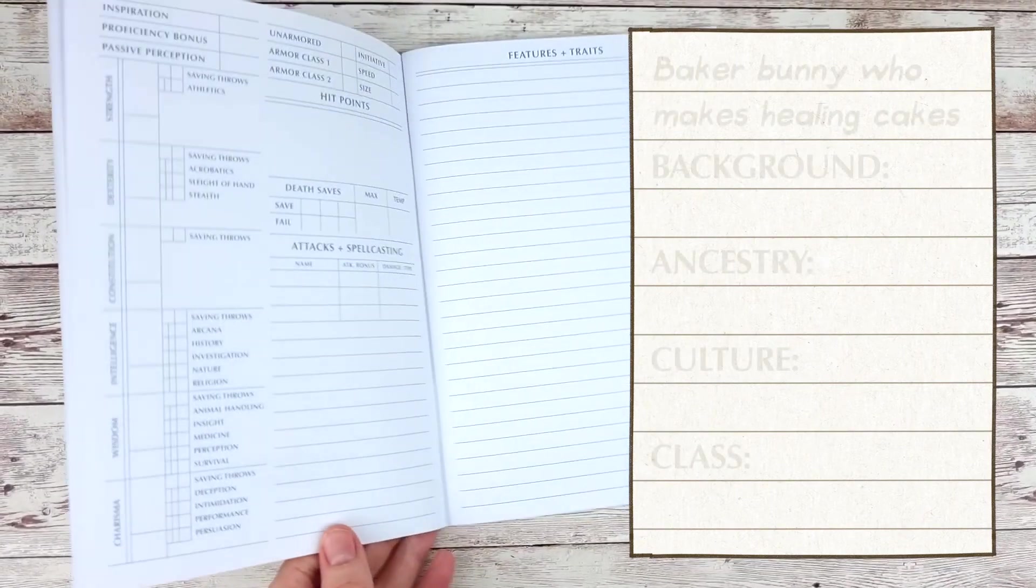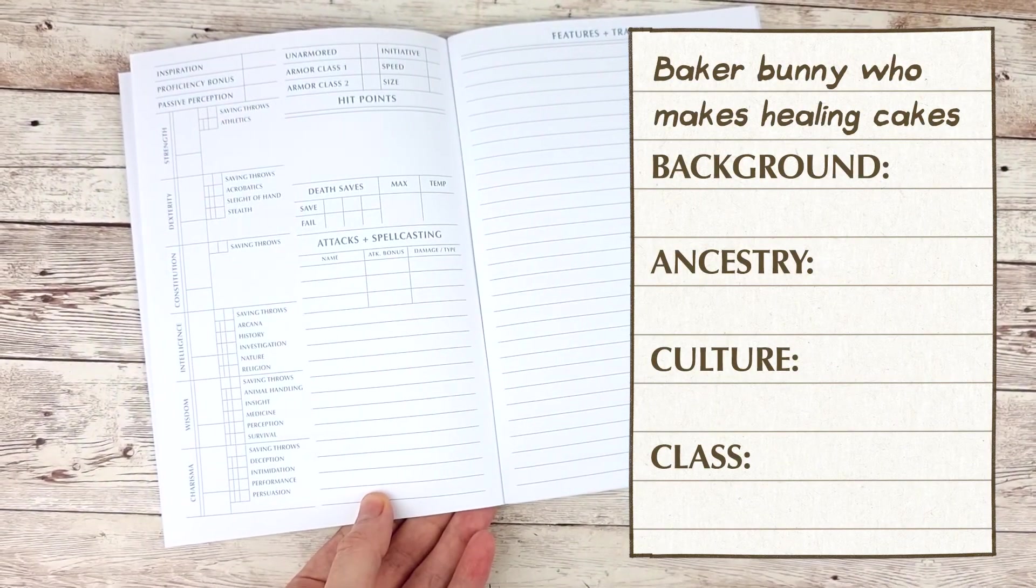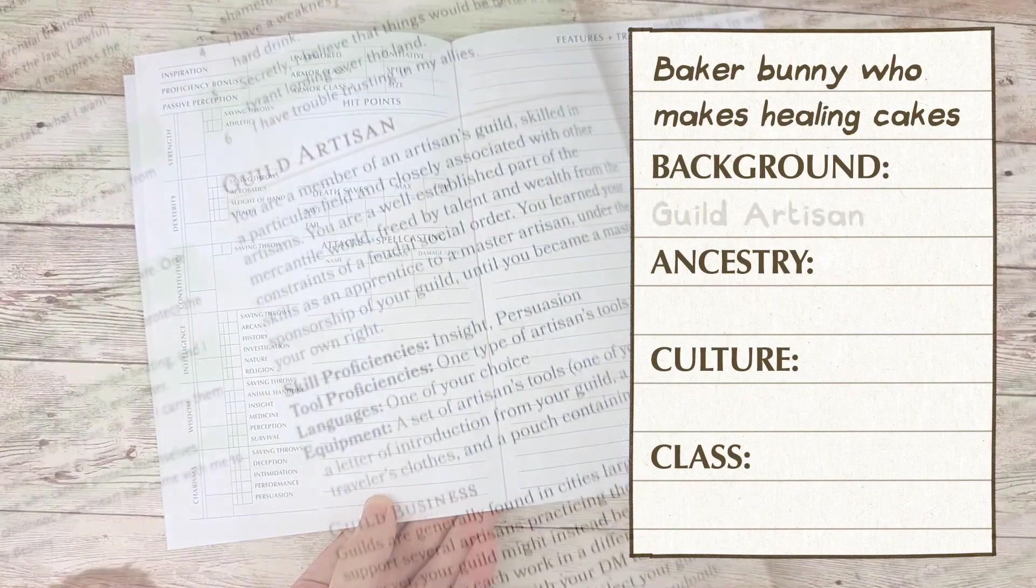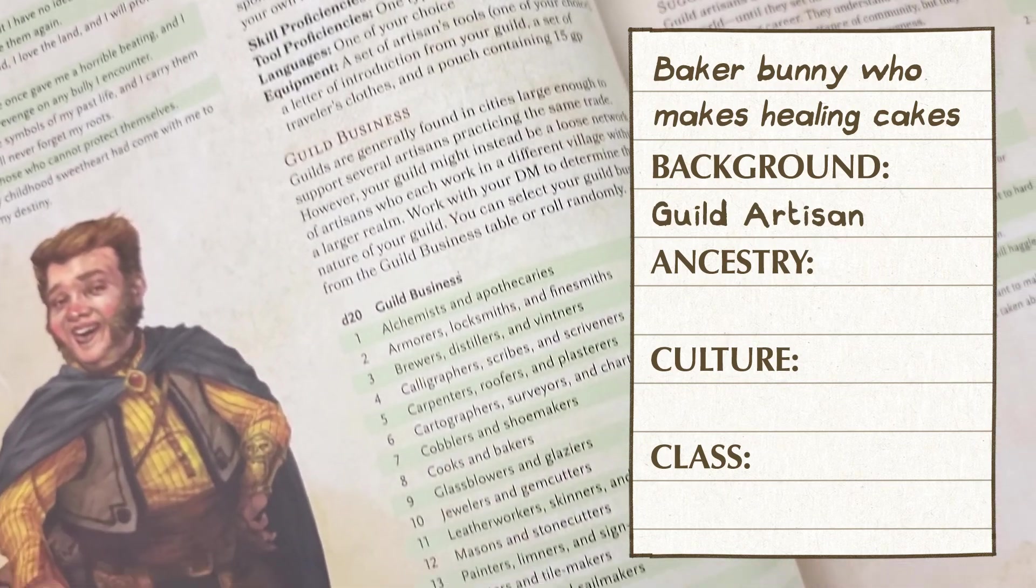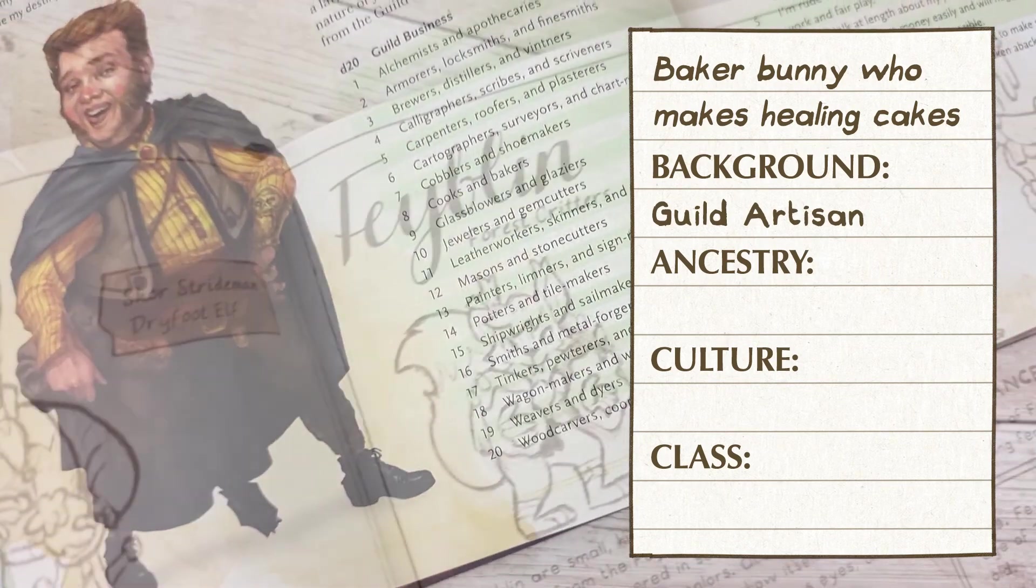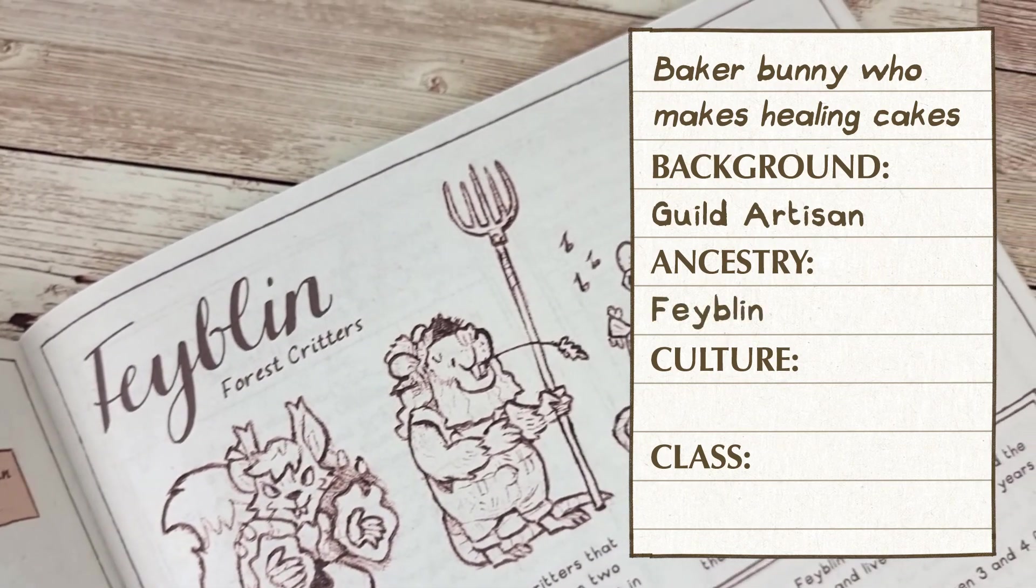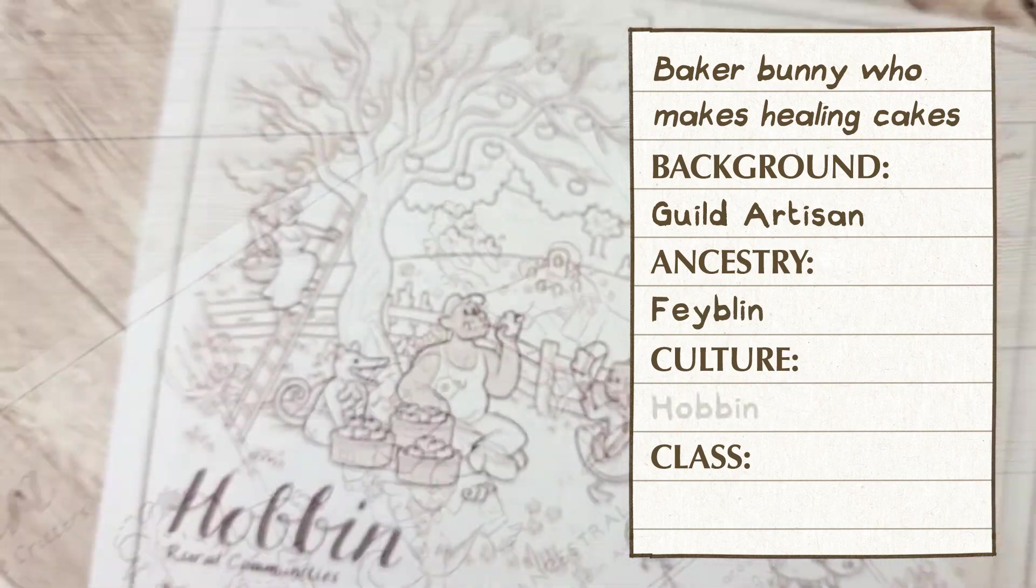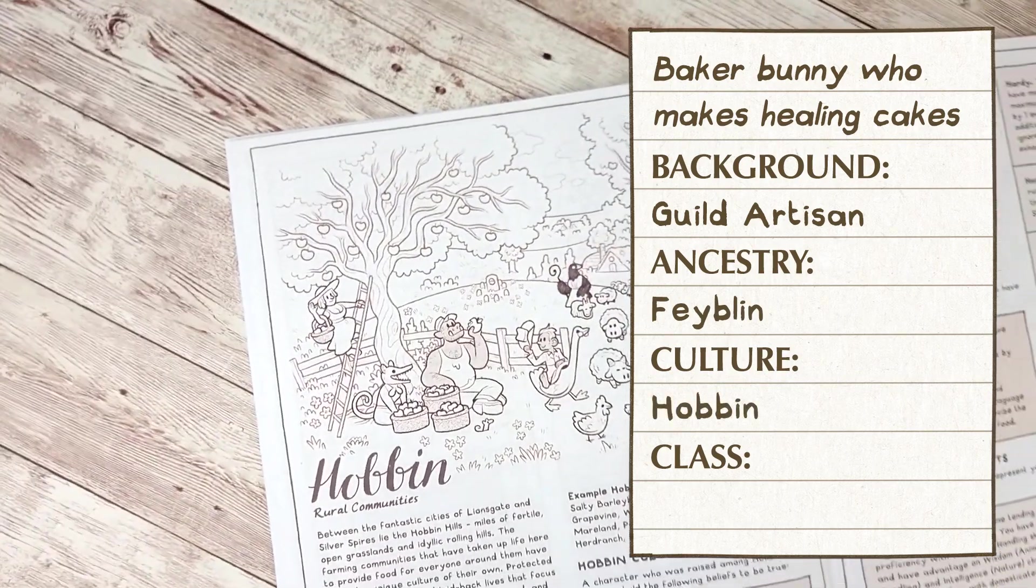My character is going to be a baking bunny who makes healing cakes so for my background I've chosen guild artisan as that reflects my life so far spent in the bakery. For my ancestry I've chosen fablin as they are woodland creatures and I've chosen a hobbin hills culture as she's from a cozy farm town.